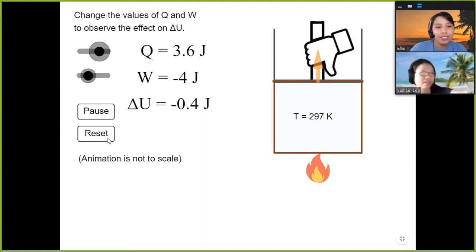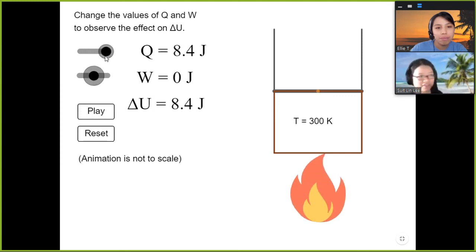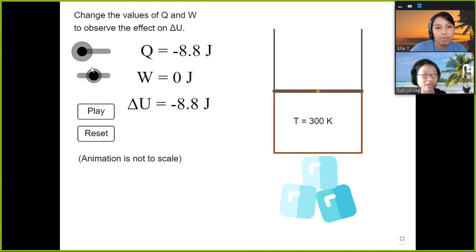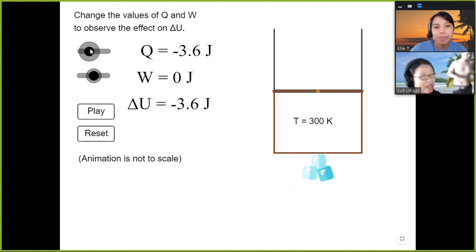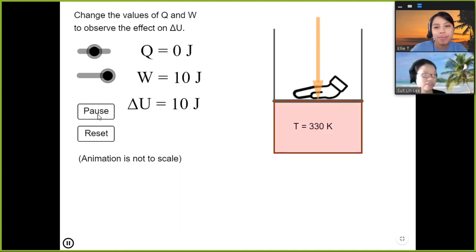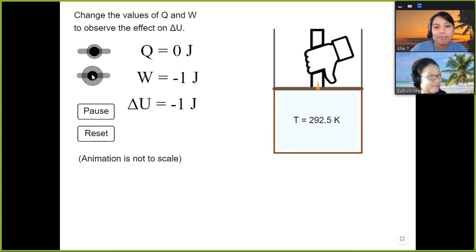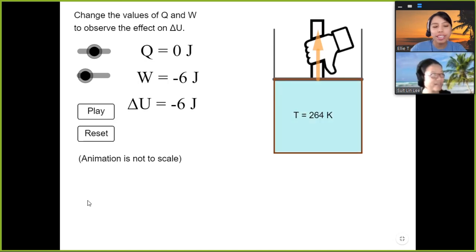So, of course, the sign convention here is important. Q is positive when you add heat. Q is negative when you remove heat. In this case, represented by the ice cubes. W is positive if the piston compresses. You press down, you do work. You play this, you will see, it's being pressed down. So W is positive when it's being pressed down. And then W is negative when it's being pulled up. Good to know the sign convention.